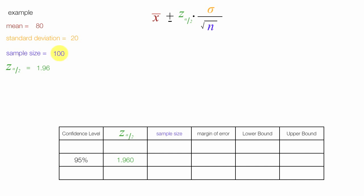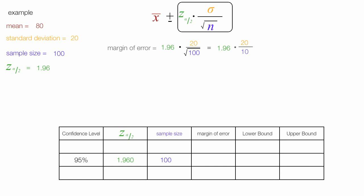I start with the sample size of 100 and calculate the margin of error. That's equal to 1.96 times 20 — the standard deviation — divided by the square root of the sample size, which is 100. This equals 1.96 times 20 divided by 10, which is 1.96 times 2, equal to 3.92.